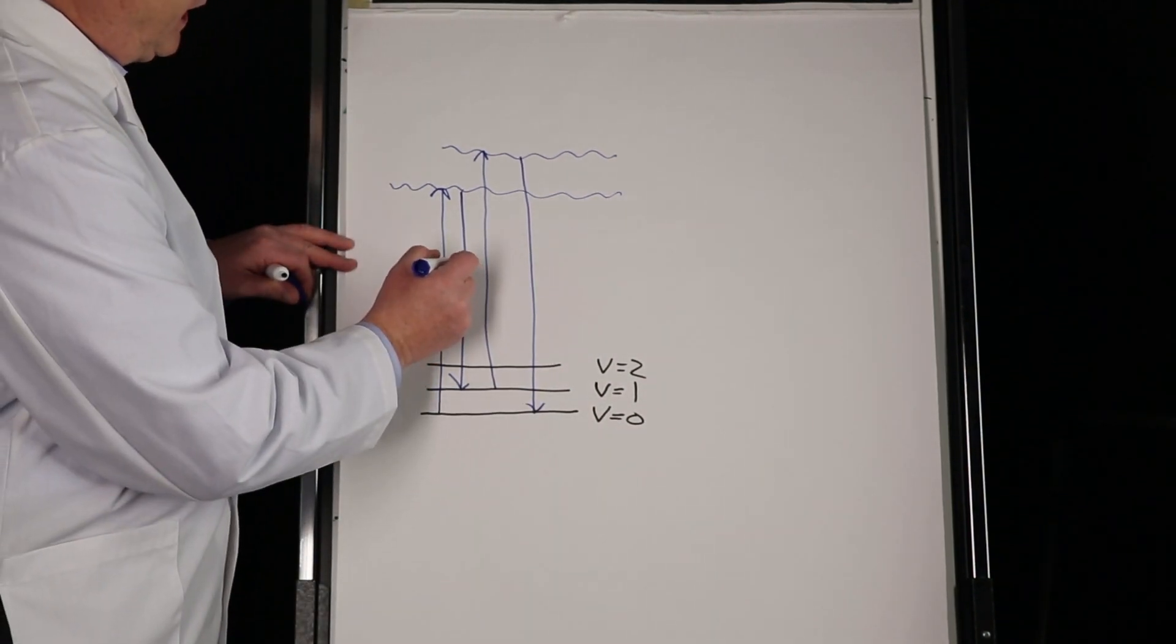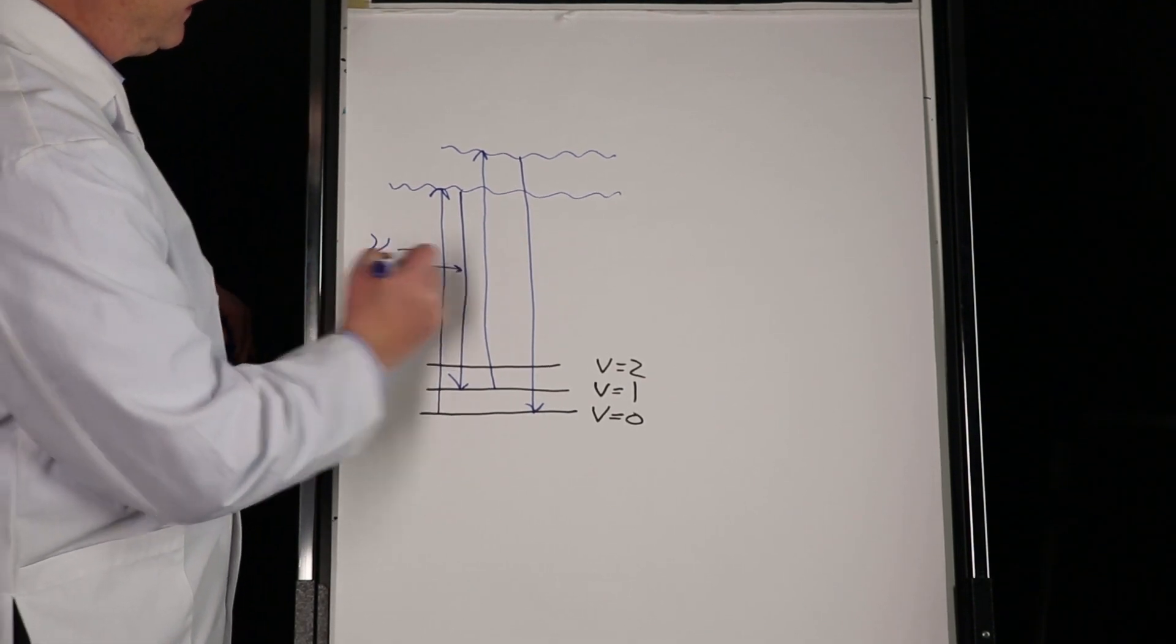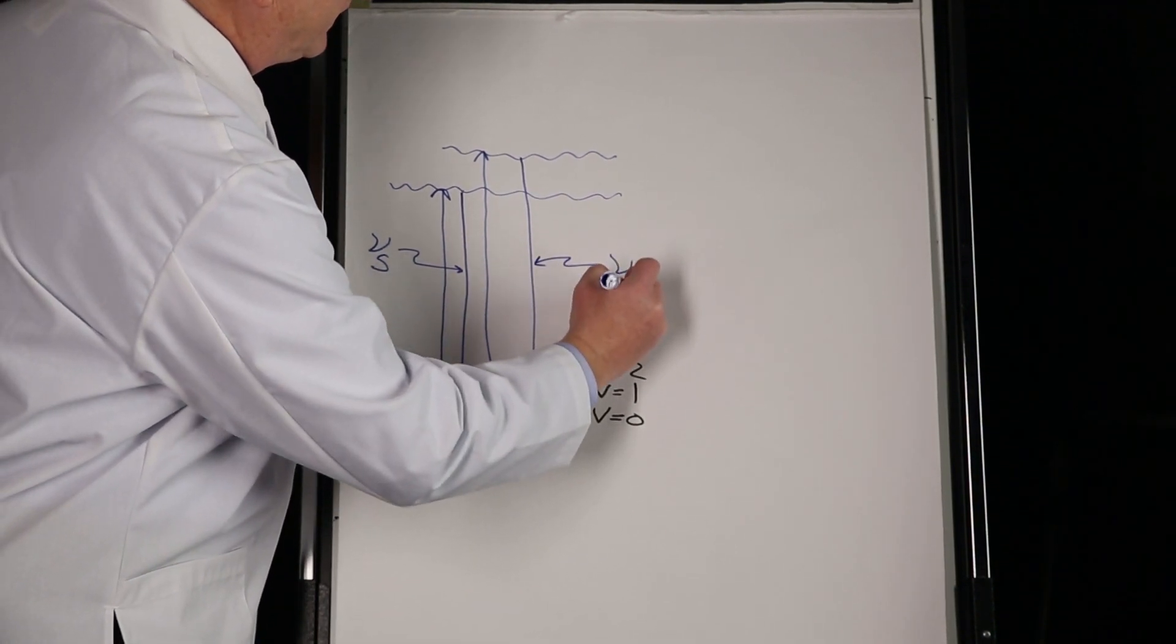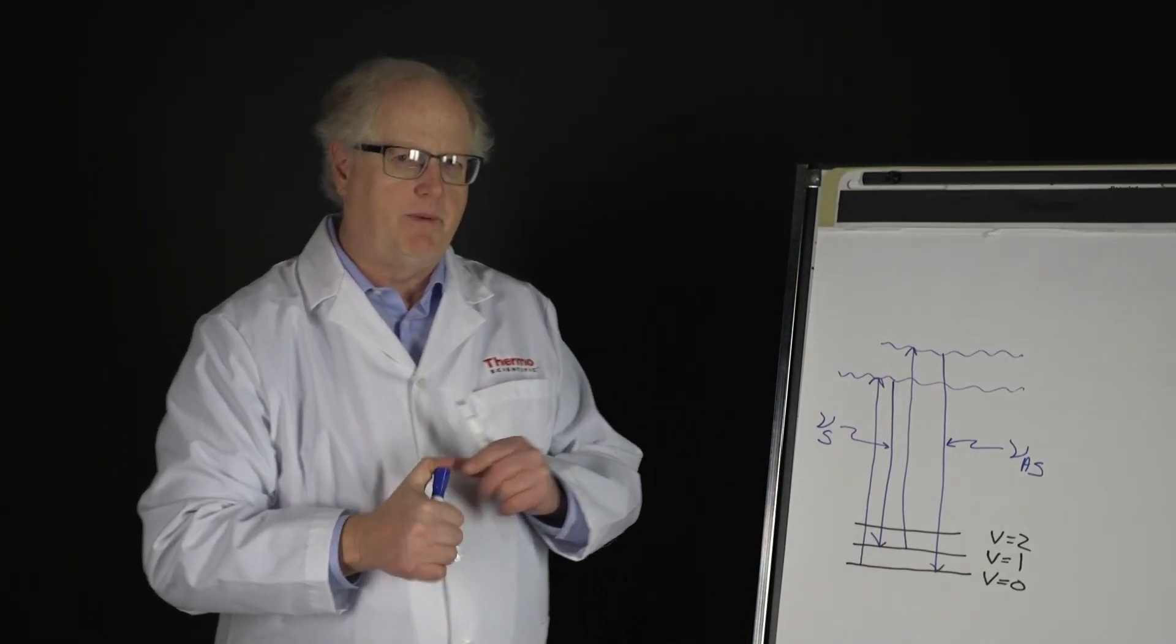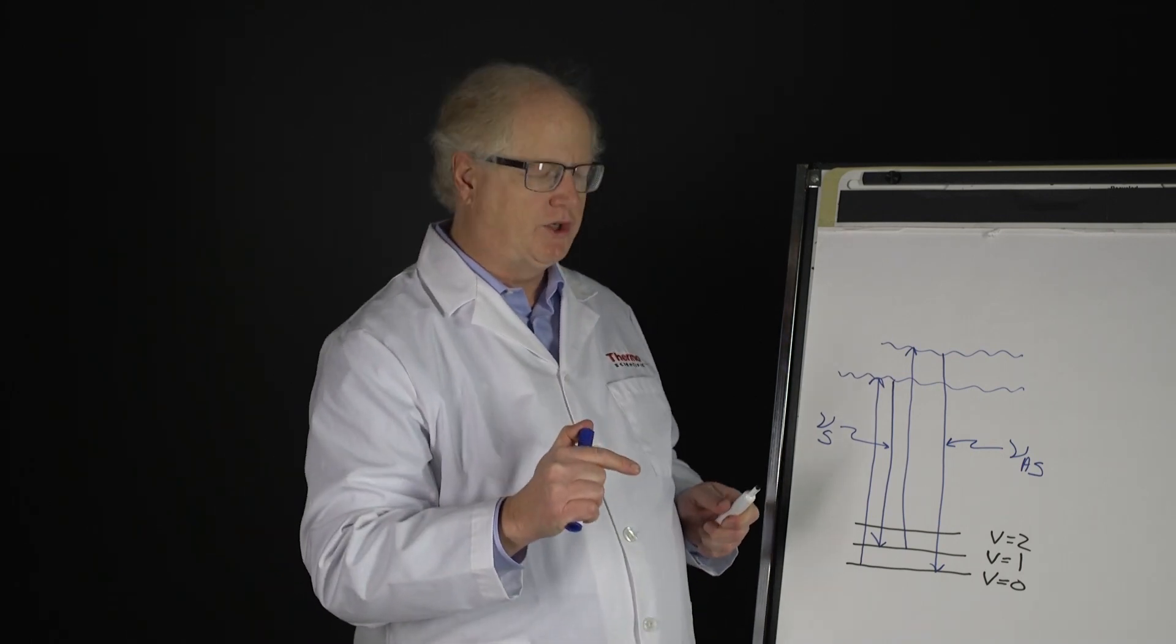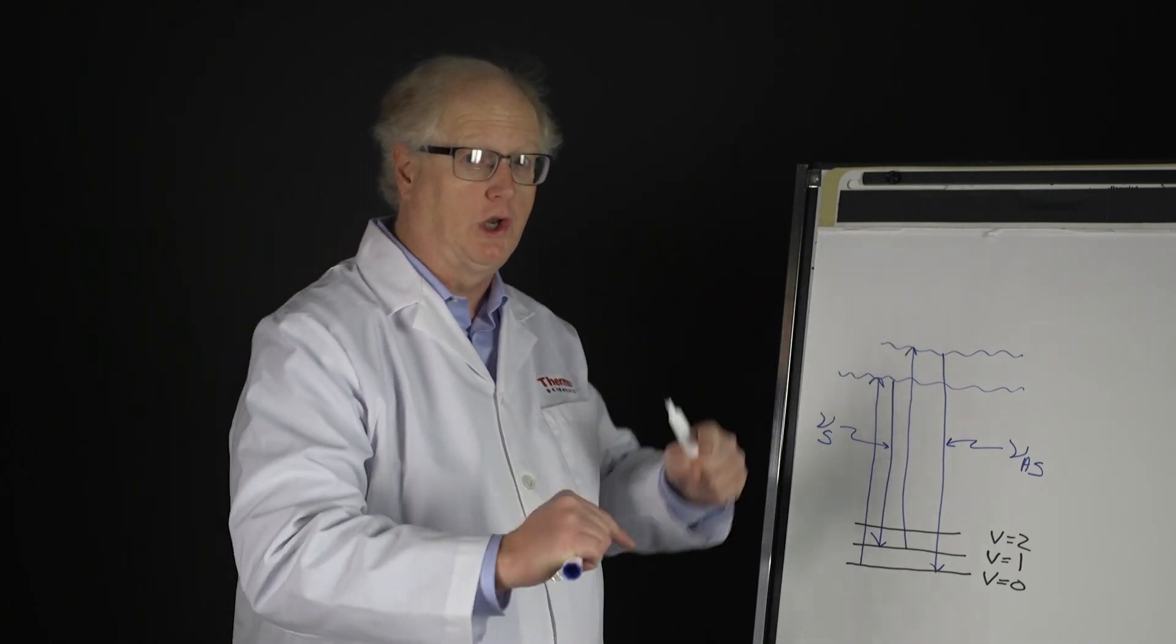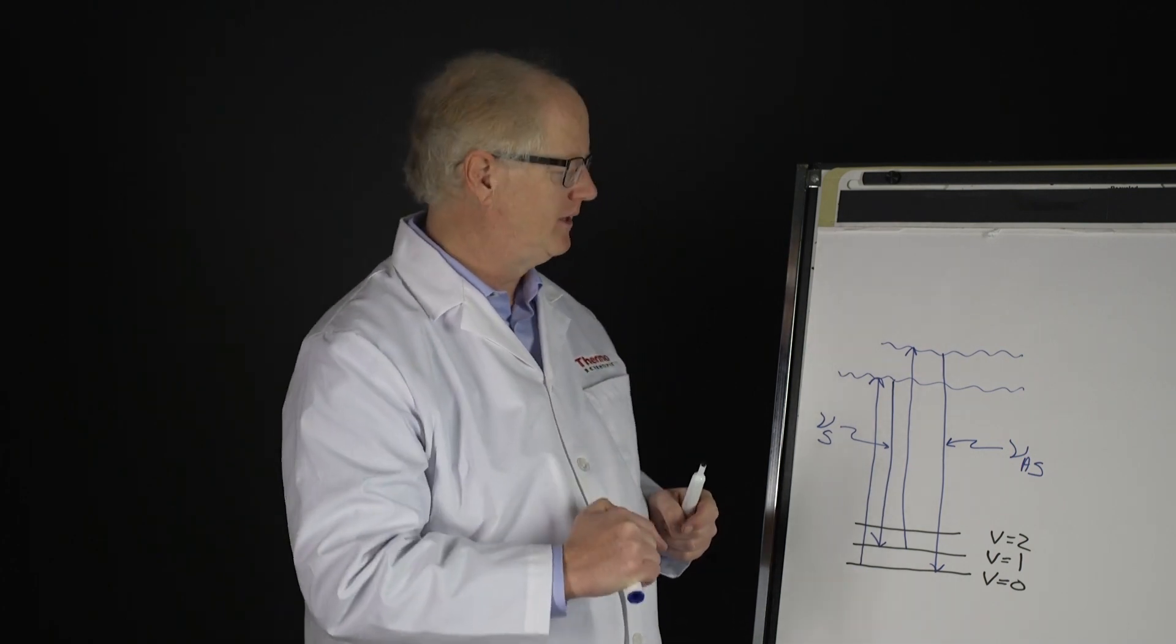Now in this case, the Stokes line and the anti-Stokes line are marked here. Notice a couple of things about them. Remember, if we go back to that fluorescence video, we showed that the fluorescent photon - you had absorption followed by emission - but that emission photon was lower in energy than the laser.